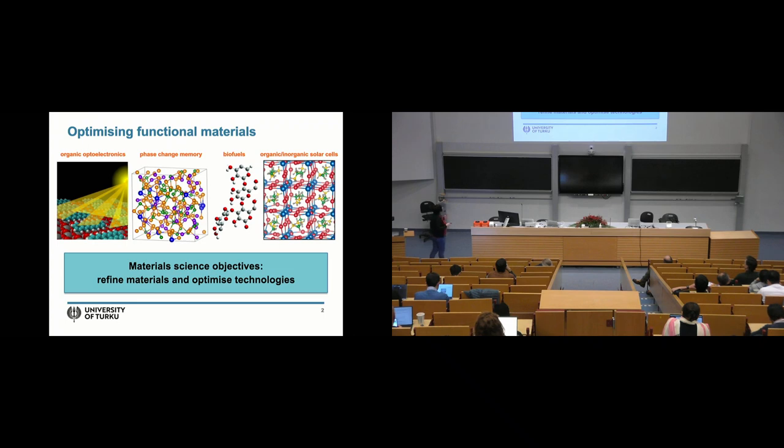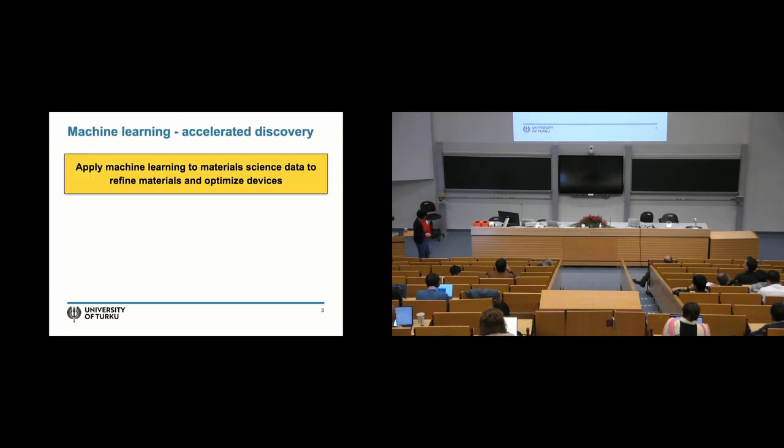I think we all agree that the objectives of material science is to refine these materials and optimize their properties for some kind of technological applications. When Patrick and I learned about machine learning in 2015 we were very quick to start on this because as we now know this has turned out to be a general accelerator in our field. We of course develop a lot of methodology but ultimately what we'd like to do with these methods is accelerate discovery. Nowadays we're applying machine learning to material science data to once again refine those materials and their performance in devices.